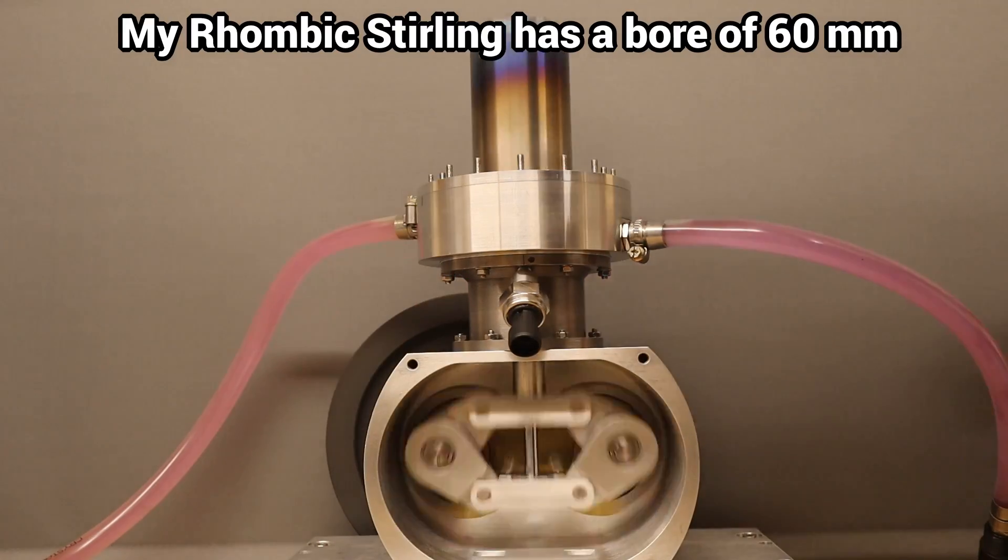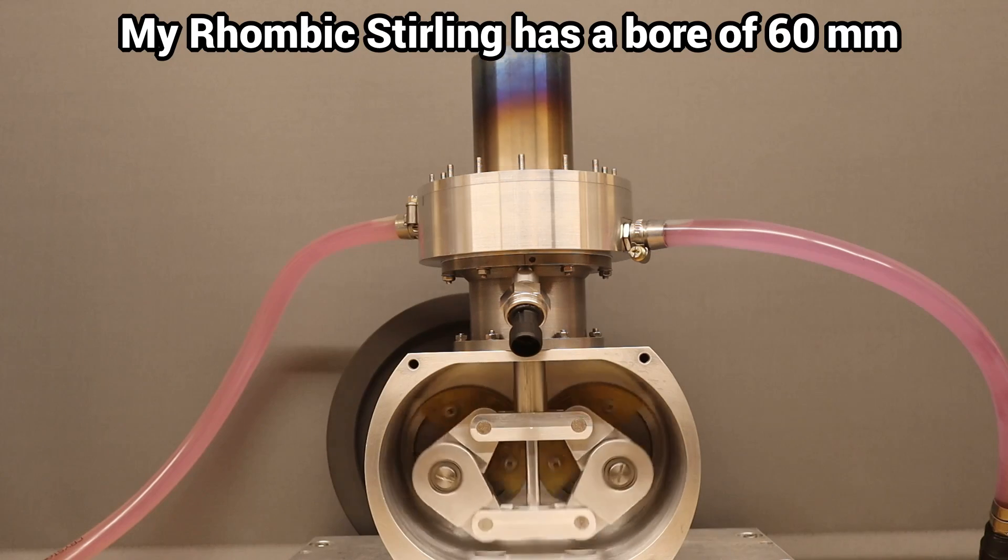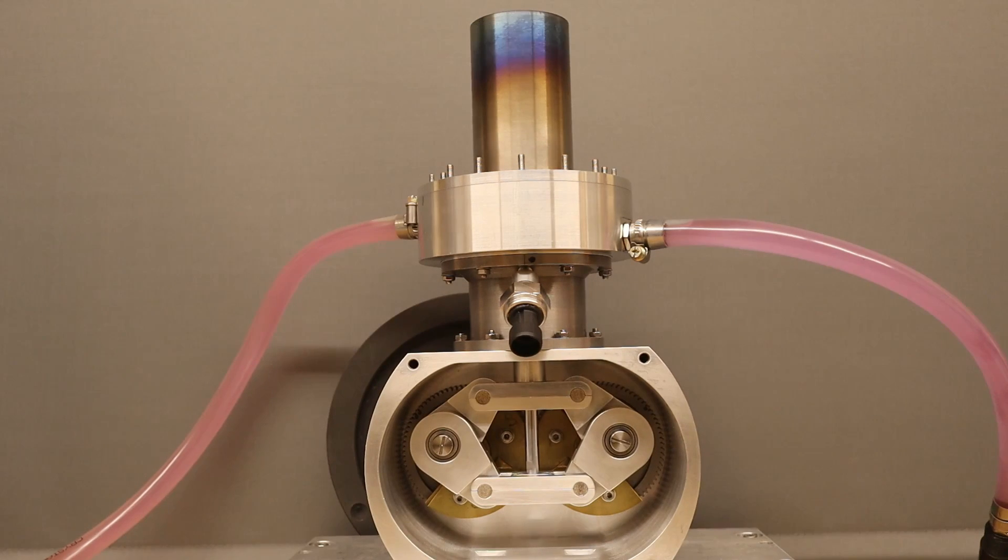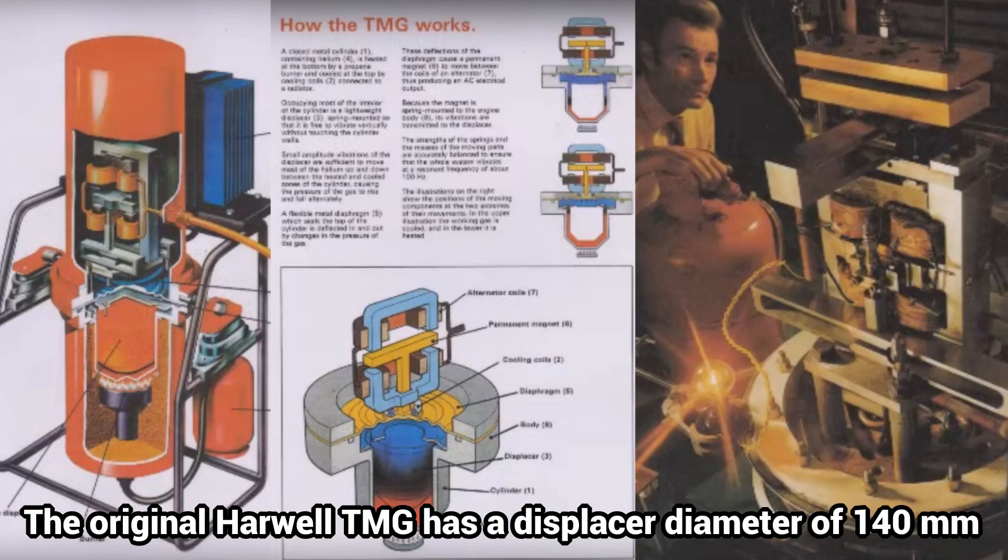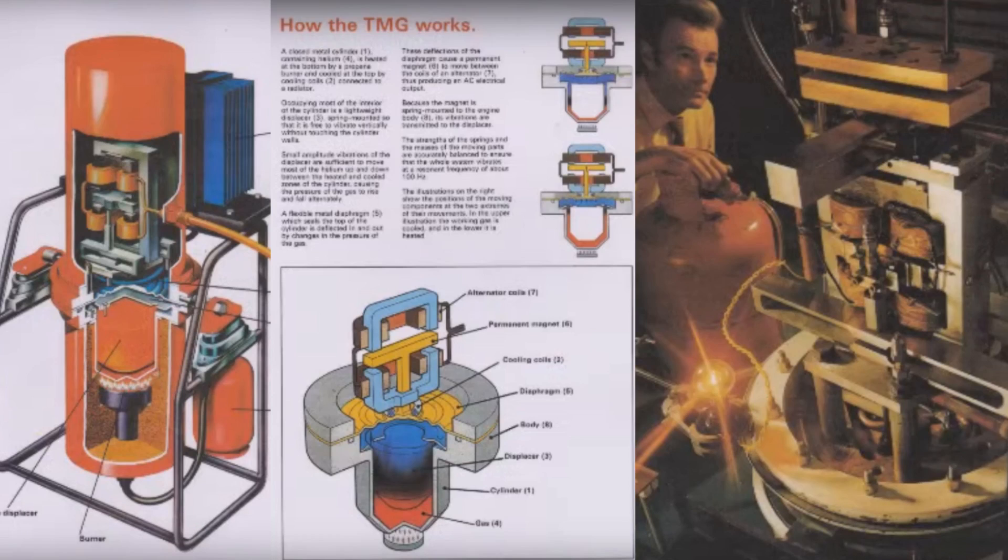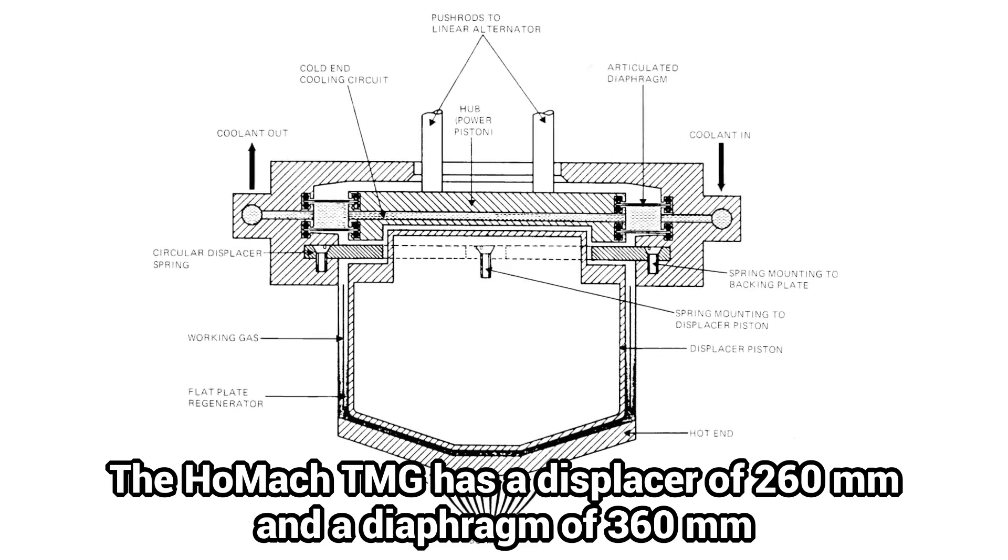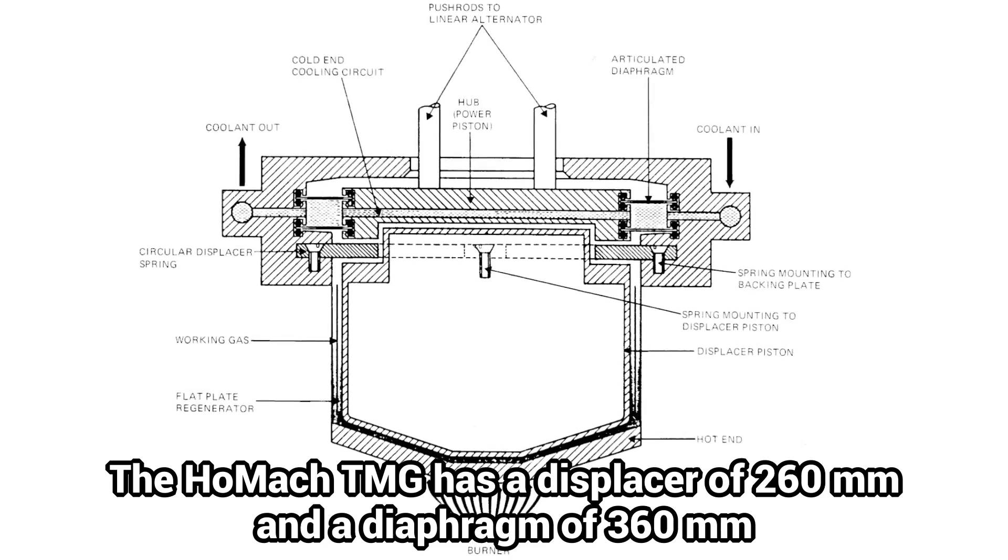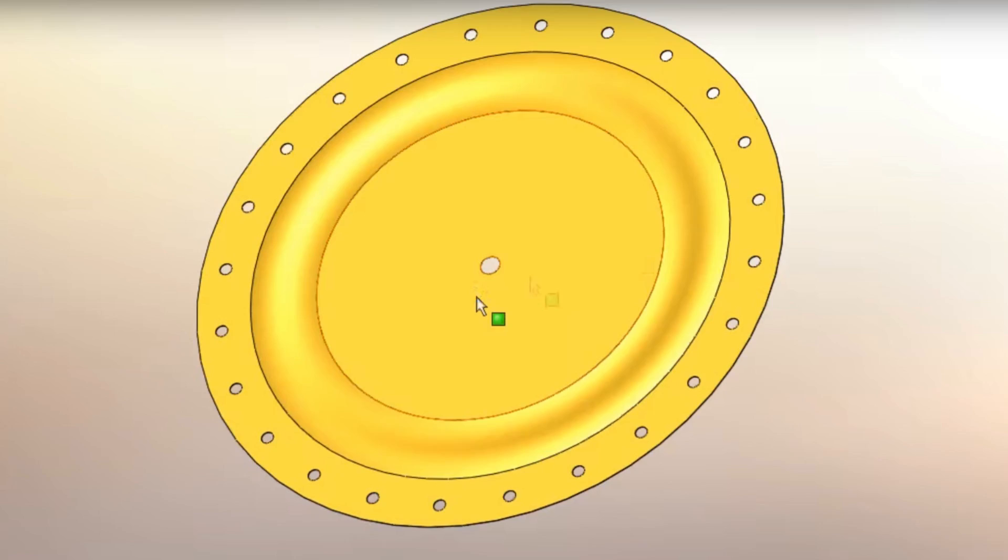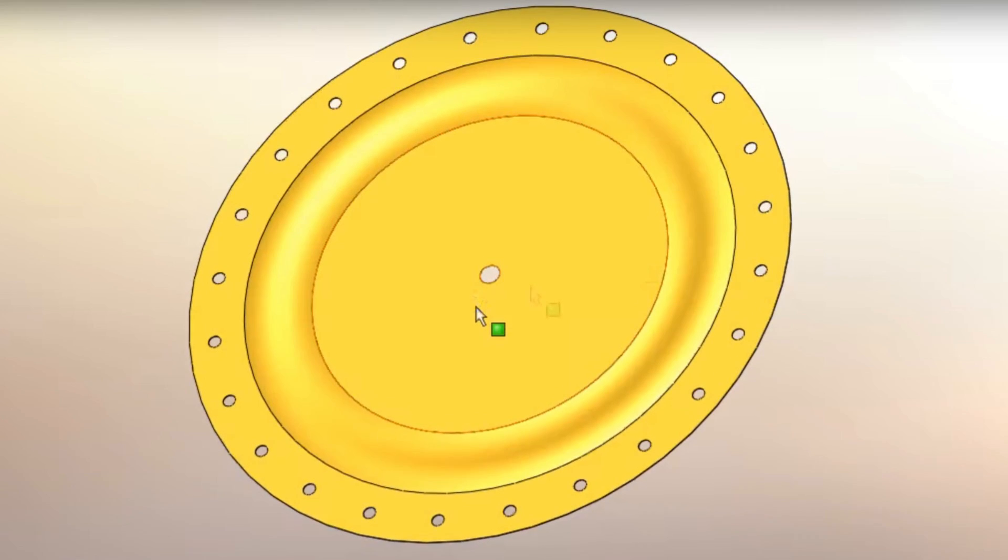For comparison, my 300 watt rhombic Stirling has a cylinder bore of 60 mm while the original Harwell TMG has a displacer diameter of about 140 mm and the later HOMAC TMG of even 360 mm.